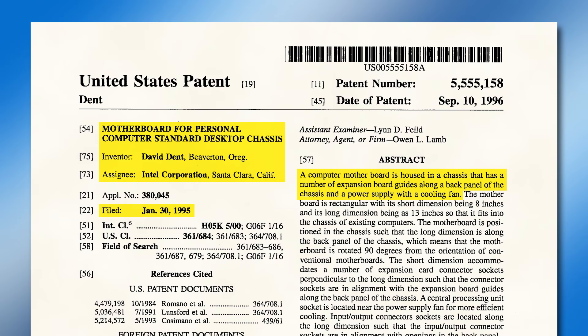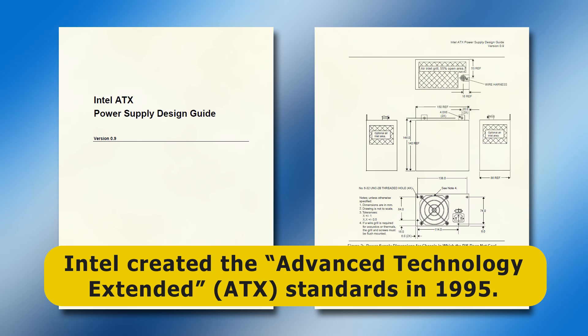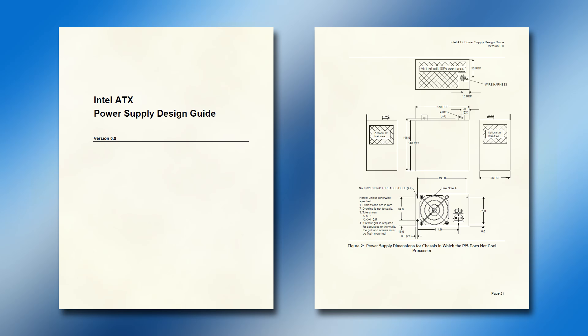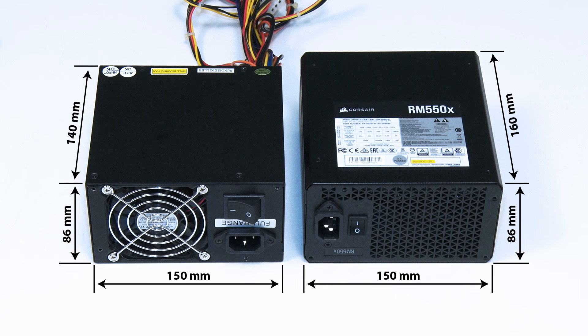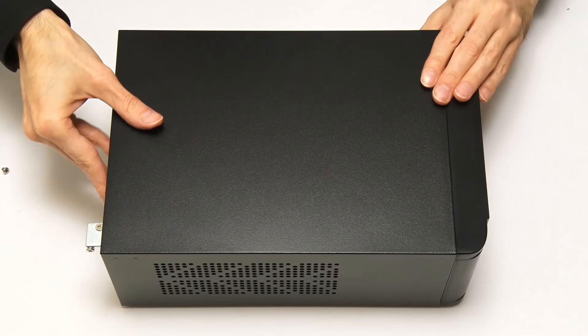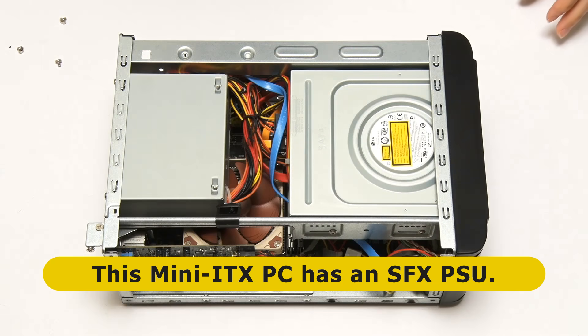The modern PC power supply was born in 1995 when Intel first developed its Advanced Technology Extended, or ATX, motherboard and power supply specifications. These and later revisions defined an ATX power supply to be 150 millimetres wide, 86 millimetres high and 140 millimetres deep. Still today, most full-size desktop PCs have an ATX power supply of this height and width, although the depth is often increased. Meanwhile, some smaller PCs, such as this mini-ITX desktop that I built some years ago, require an SFX or small form factor unit.